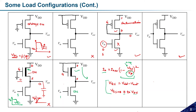If Vin equals zero, the lower transistor is off and VDD is transferred to Vout. If Vin equals one, both transistors are on and a voltage divider works. The output behavior will look like: maximum potential is VDD, and it depends on sizing of the nMOS transistors. If M2 (pull-down) is stronger, the waveform shifts toward the downward side.